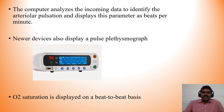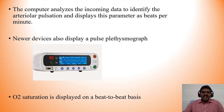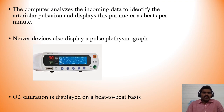Once the pulse oximeter is connected, the light is emitted, partially absorbed, and partially transmitted. The transmitted light is collected and the computer analyzes the incoming data to identify arterial pulsation, displaying heart rate in beats per minute. With each heartbeat, a wave is produced called the plethysmographic wave. Older pulse oximeters display only the numerical SpO2 value, whereas newer devices display the pulse plethysmograph waveform alongside the SpO2 percentage. Oxygen saturation is displayed on a beat-to-beat basis.